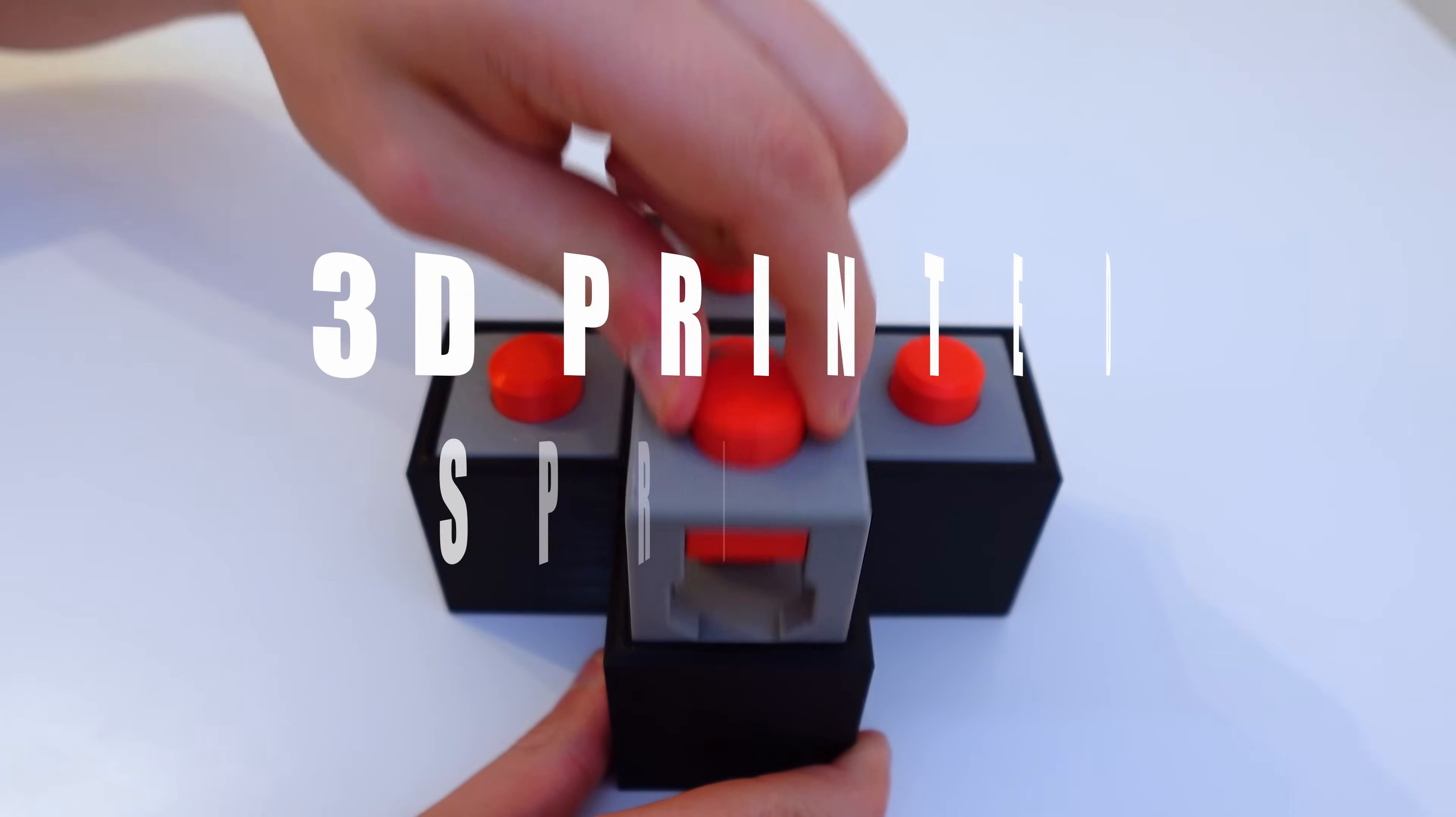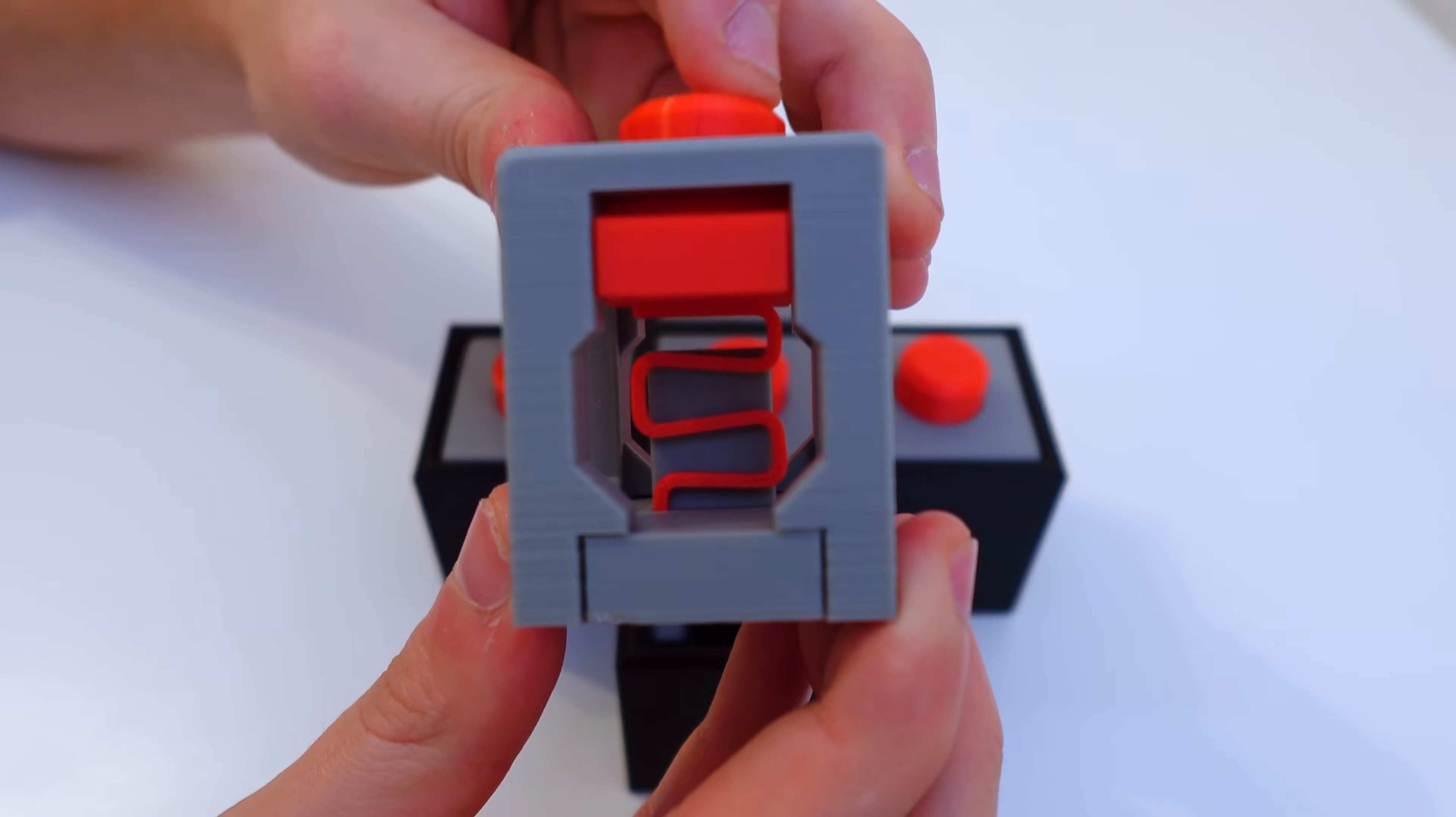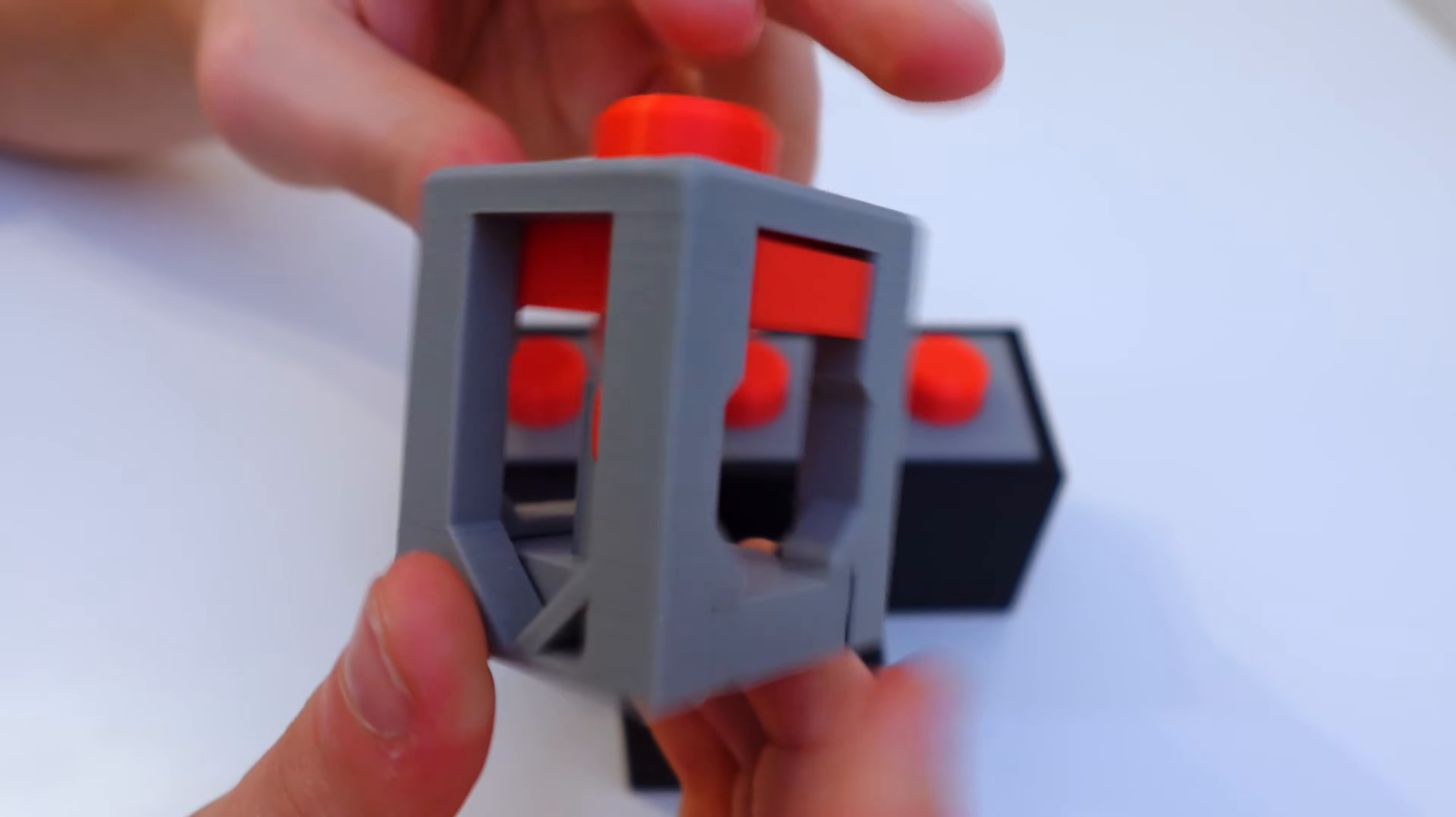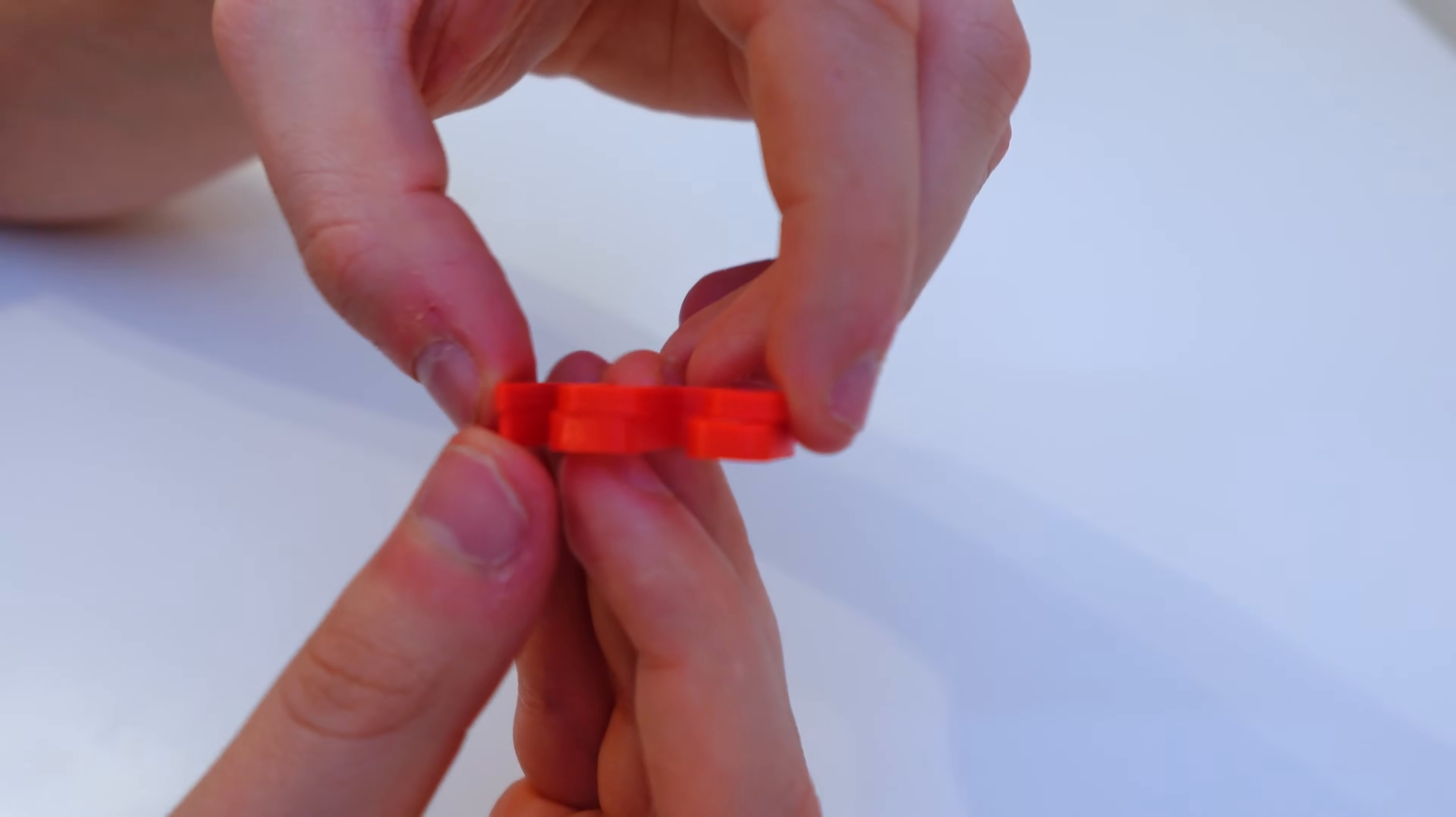Moving on we have 3D printed springs. These mimic traditional springs in many ways, but with a few key differences. While they wear out faster, they are incredibly versatile. You can customize everything from the resistance by just increasing their thickness to the shape and function.